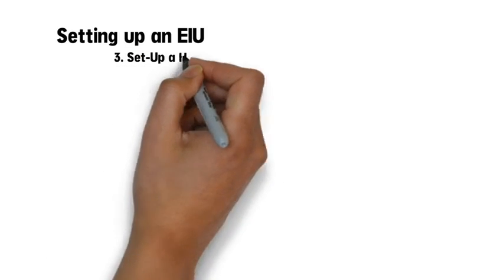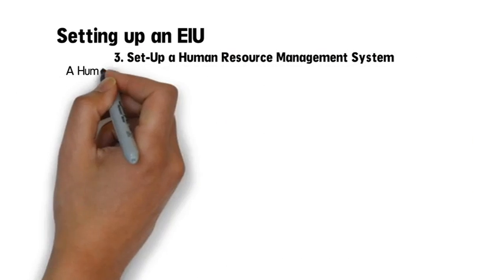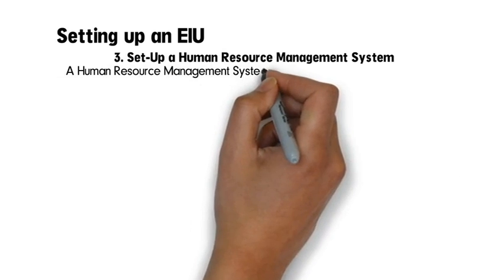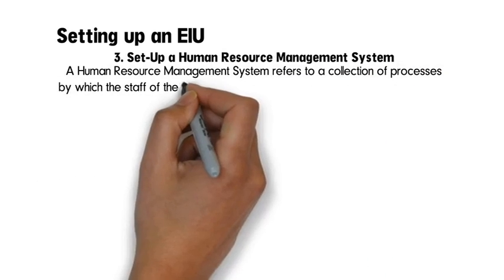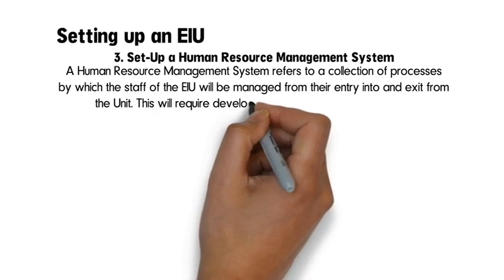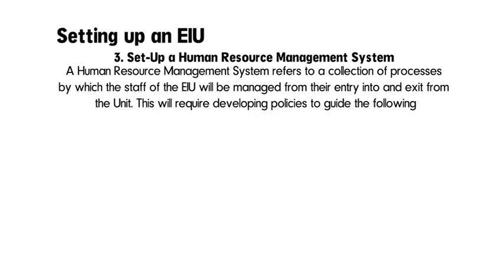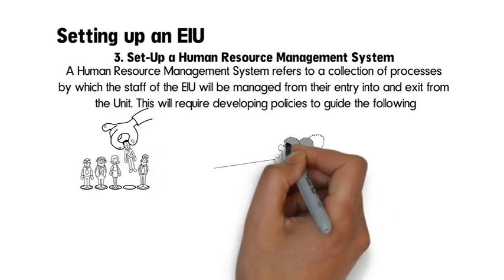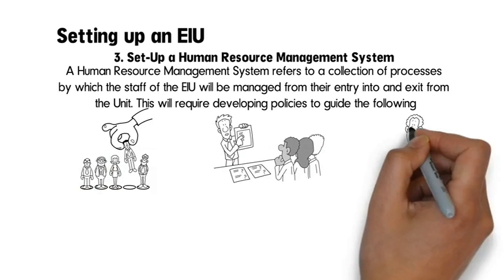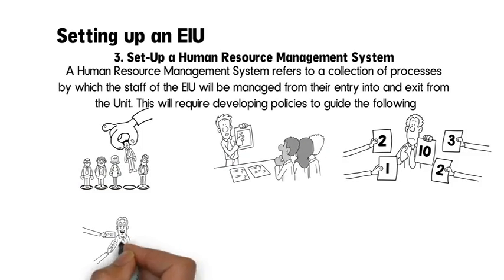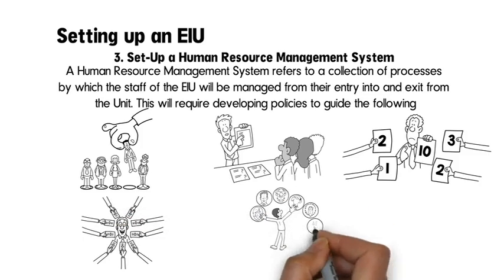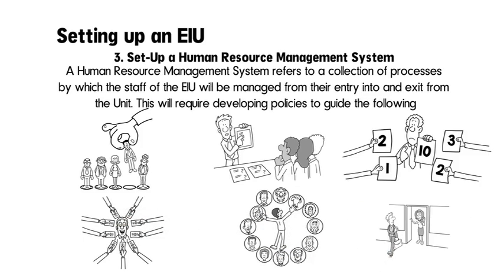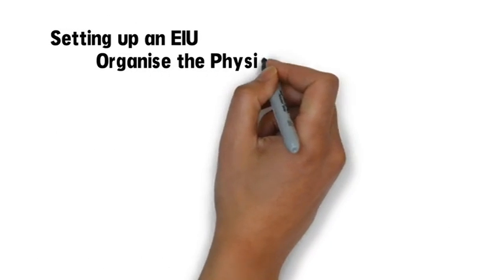Set up a Human Resource Management System. A Human Resource Management System refers to a collection of processes by which the staff of the EIU will be managed from their entry into and exit from the unit. This will require developing policies to guide the following: recruitment, selection and placement, learning and development, performance management, compensation and reward, career management, and retirement and transition.